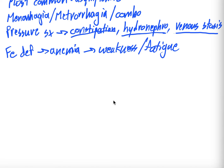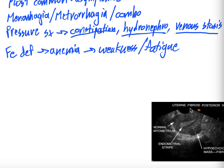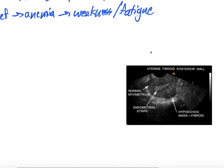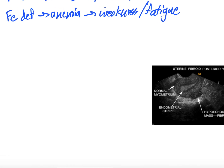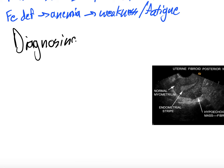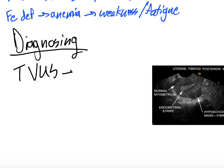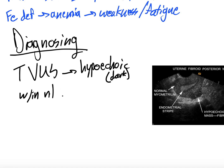How do we diagnose these? The go-to, like with endometrial polyps and adenomyosis, is transvaginal ultrasound. What you're looking at are hypoechoic — that's dark — areas within normal myometrial tissue.